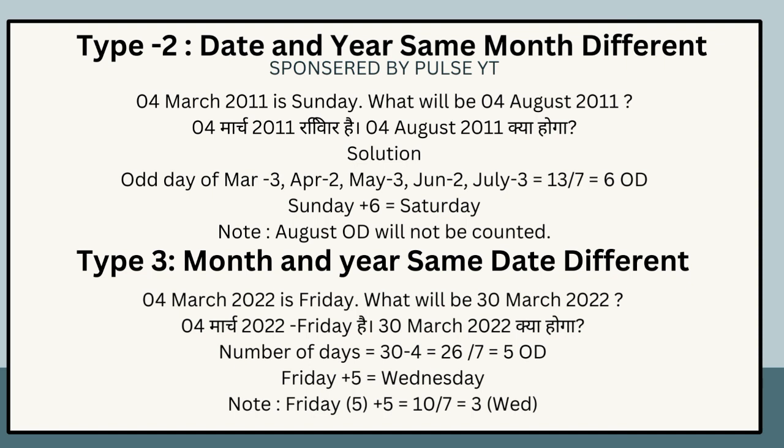Solution: Count odd days from March to July (not counting August). MAR = 3, APR = 2, MAY = 3, JUN = 2, JUL = 3. Total = 13 ÷ 7 = remainder 6 odd days. Sunday + 6 = Saturday. Note: August odd days are not counted.